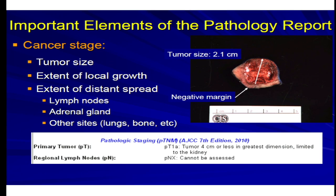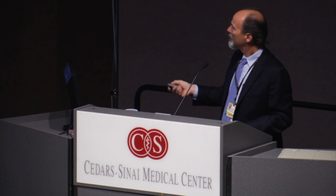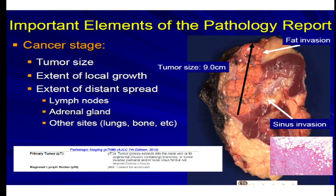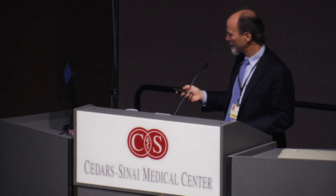Compare that to a complete nephrectomy specimen showing a much bigger tumor, about 9 centimeters, growing into the fat and the sinus fat, demonstrating more aggressive local growth. Microscopically it's extending into fat. We would stage this out as a T3A tumor because it's obviously larger and more infiltrative.